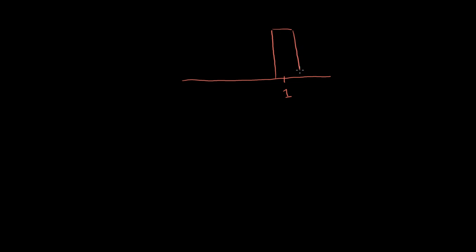So let's look at a population where the probability of success — and we'll define success as 1 — has a probability of p, and the probability of failure is 1 minus p. If you add these two up, they're going to add to 1, because these are the only two possibilities that can occur. For example, if there's a 60% chance of success, there has to be a 40% chance of failure; 70% chance of success means 30% chance of failure.